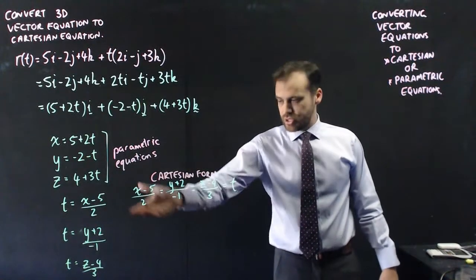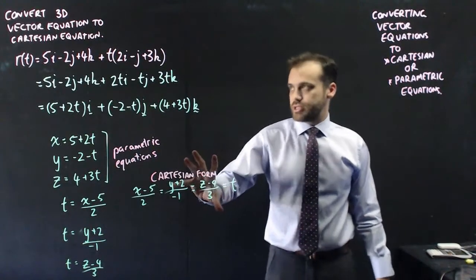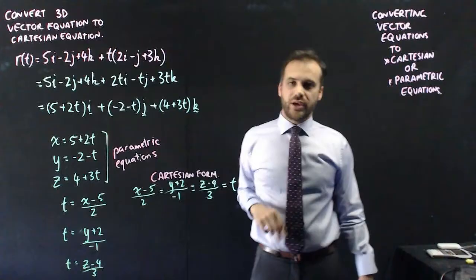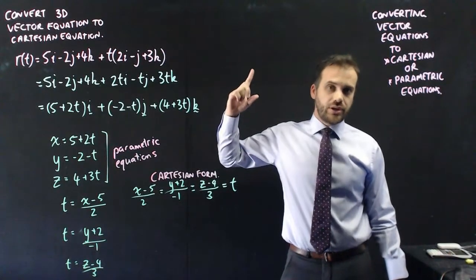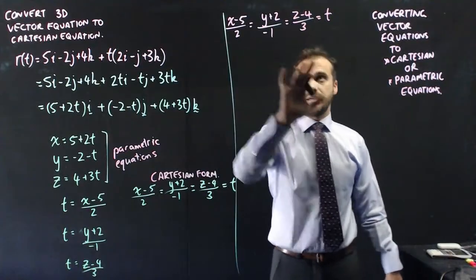So that's it in Cartesian form. Now the obvious question is, how do we go from this Cartesian form back to our vector equation? Well, you do the whole thing in reverse. So, t equals this, t equals this, t equals this.